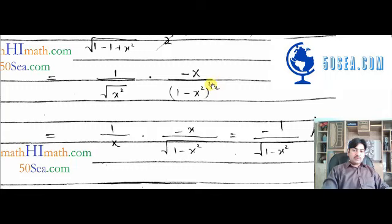This is the square root form. Writing the square root: if x and x cancel out, finally the answer is minus 1 over the square root of (1 minus x squared). With this, the question is complete.